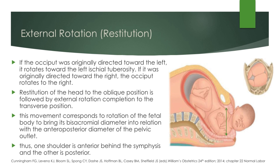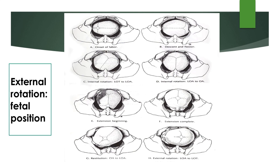The next cardinal movement of labor is external rotation, also called restitution. If the occiput was originally directed toward the left, it rotates toward the left ischial tuberosity; if directed toward the right, the occiput rotates to the right. Restitution of the head to the oblique position is followed by external rotation completion to the transverse position. This movement corresponds to rotation of the fetal body to bring its bisacromial diameter into relation with the anteroposterior diameter of the pelvic outlet, so that one shoulder is anterior behind the symphysis and the other is posteriorly directed. With external rotation, the fetal position is converted to left occiput transverse.